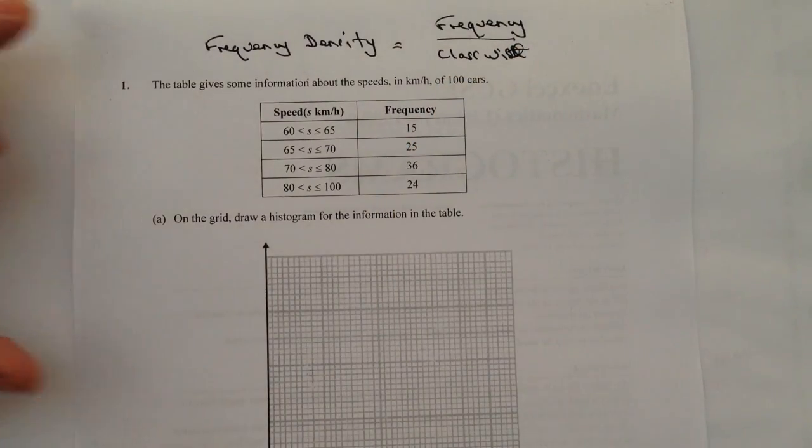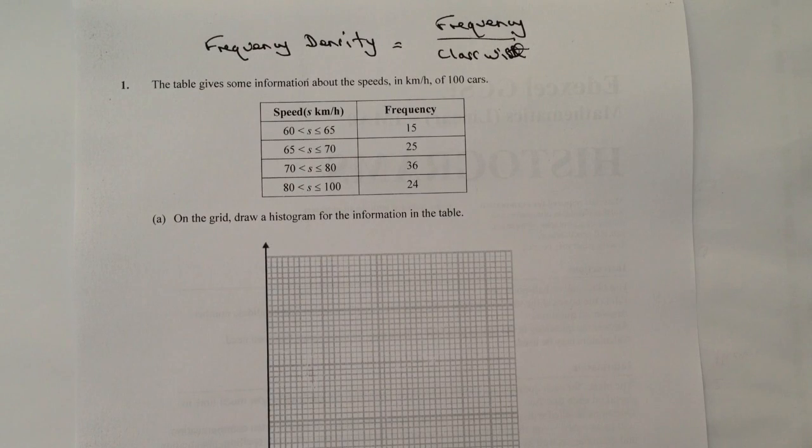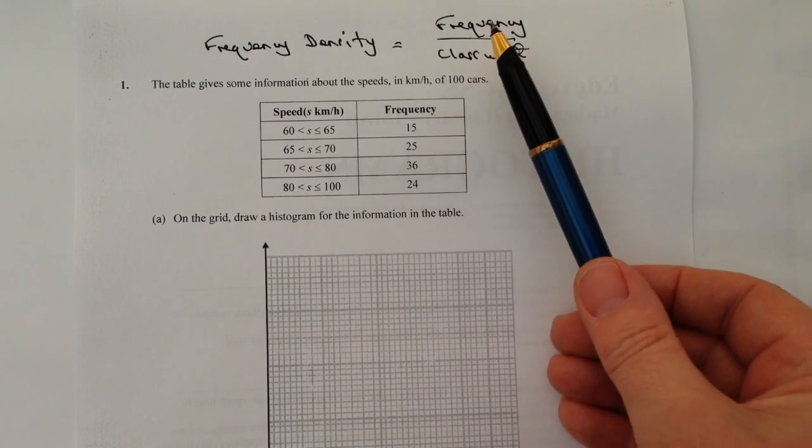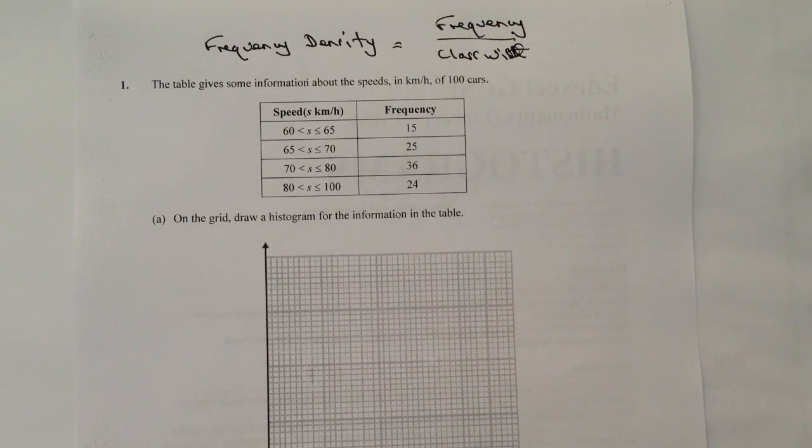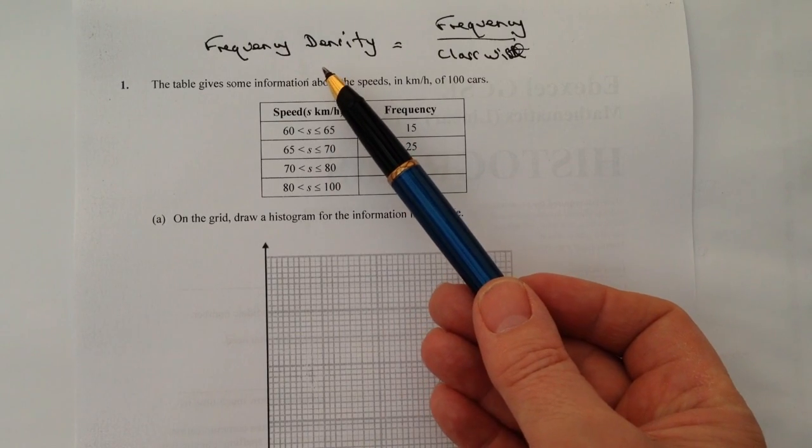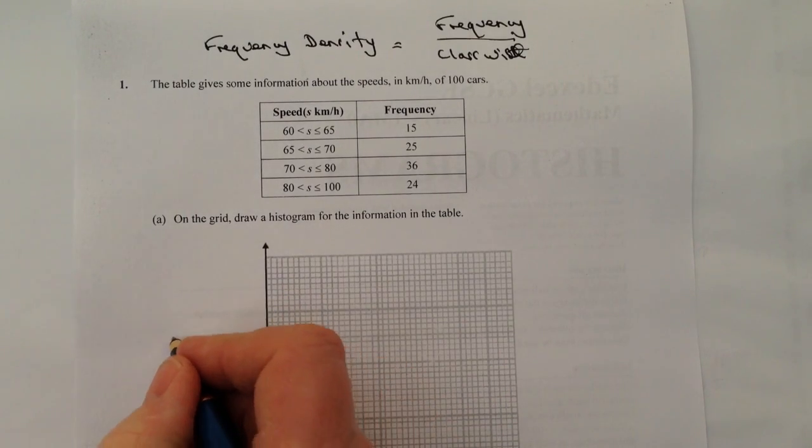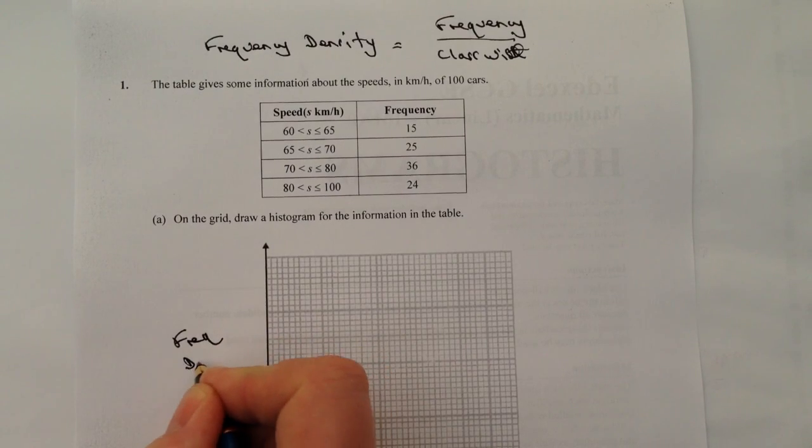because what we're being asked to do is create a histogram on the grid that's being given to us. At the moment we've got the speeds, which effectively are the class width, so I'm absolutely fine with that. I've been given the frequency, so I've got frequency and I've got class width. So always with histograms, on the left-hand side we have the frequency density, which is going to be this axis here.